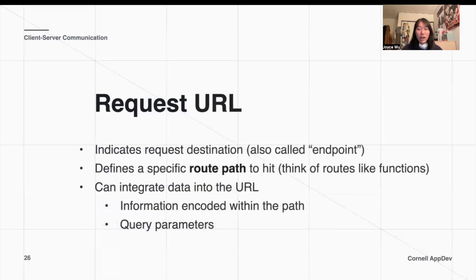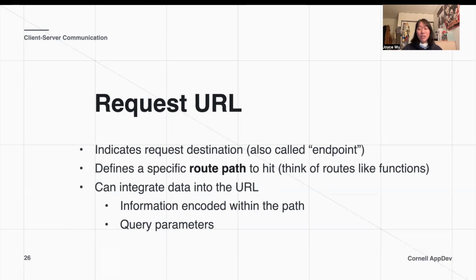The request URL is essentially the destination as to where our request is going to go — it tells the back end to do a specific thing for us. We call these things endpoints. An endpoint is associated with a specific route path to hit, and it's associated with some different functions that might happen once that endpoint is called. Those are the specific route paths.